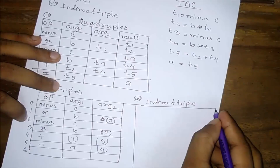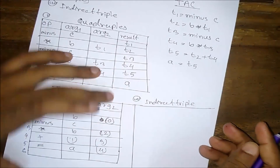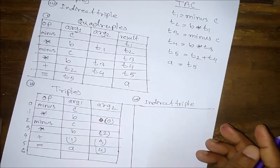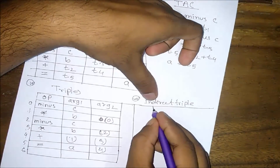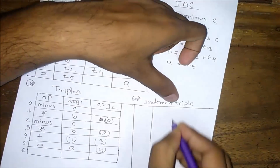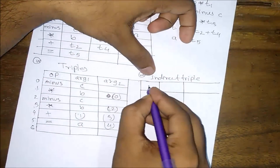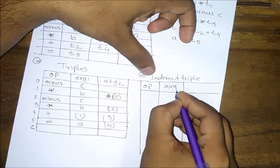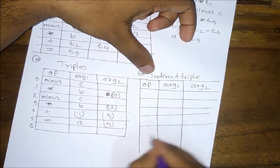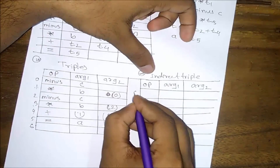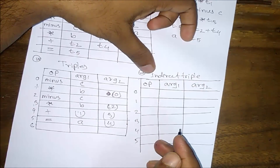So I am going to show you indirect triples. Indirect triples are a part of the list pointer. I will add the list pointer. The indirect triples table has fields: operator, argument 1, argument 2. Locations are numbered 1, 2, 3, 4, 5.